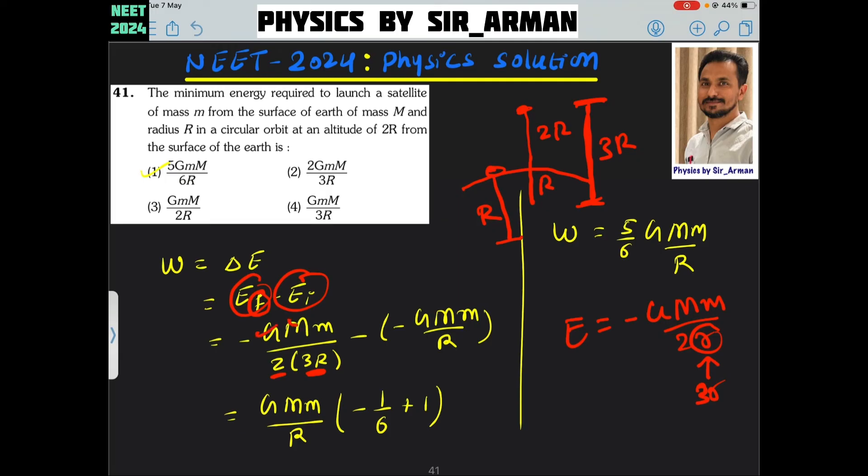Now we can take common here GMm by R. And minus sign here. So it is minus here, 2 times 3 is 6, so 1 by 6, and minus minus plus, so plus 1. If you solve this, you will get work done equals 5 by 6 GMm by R.